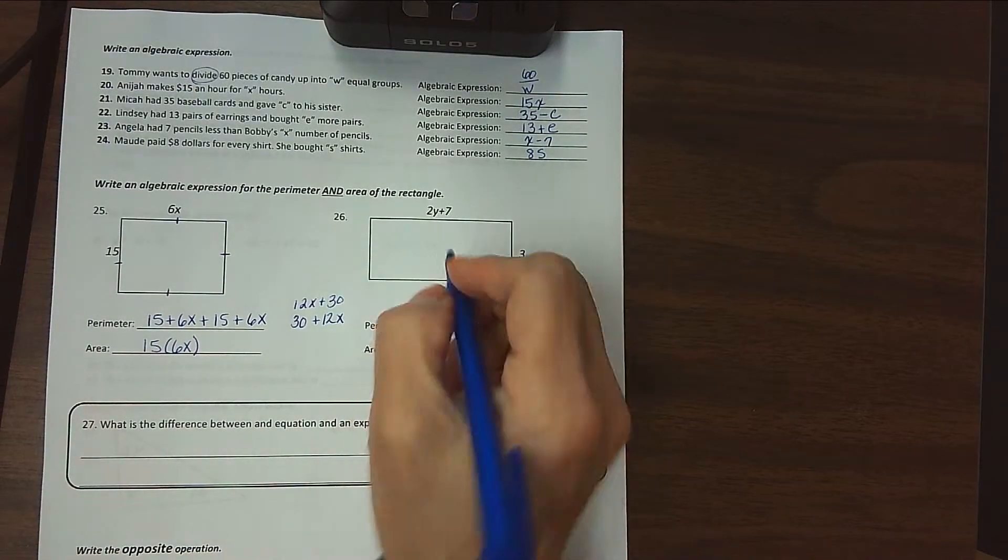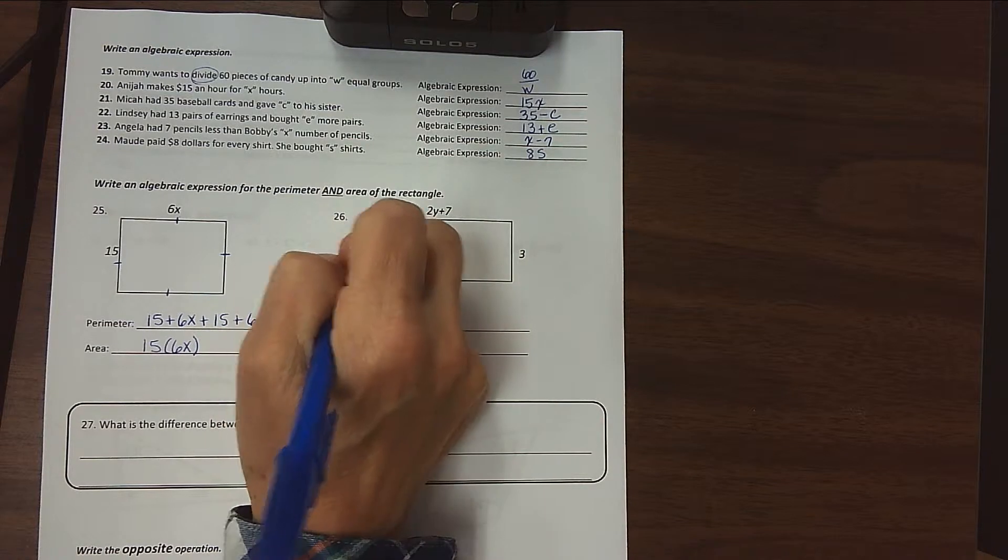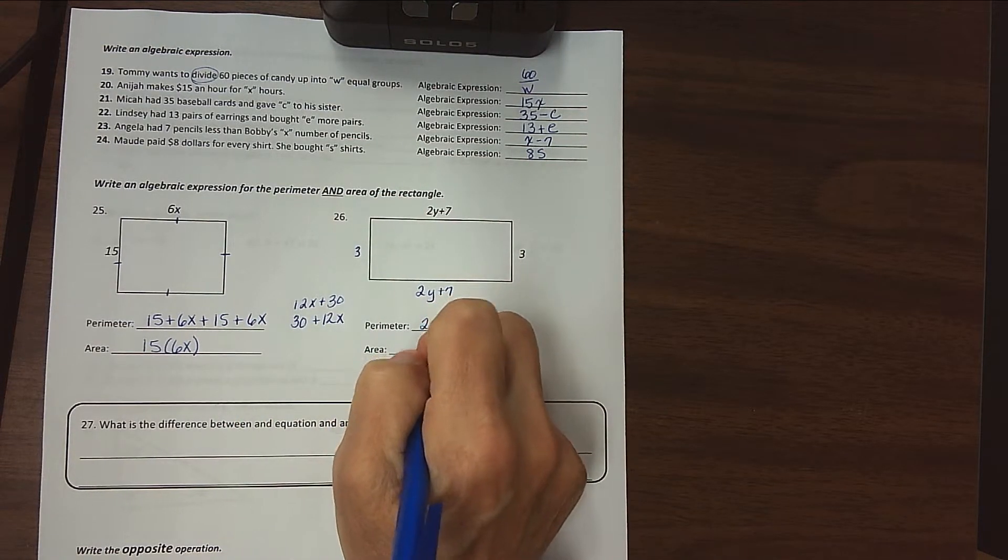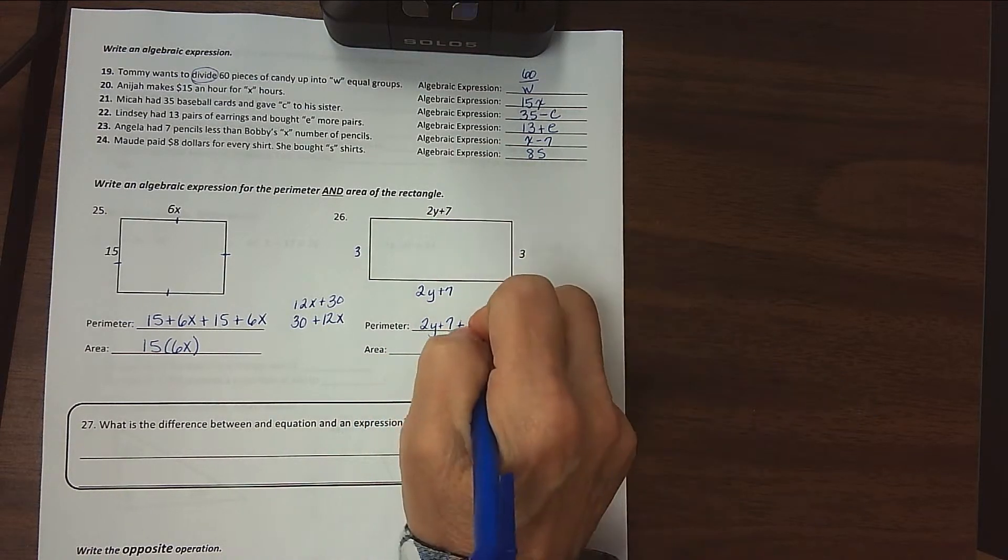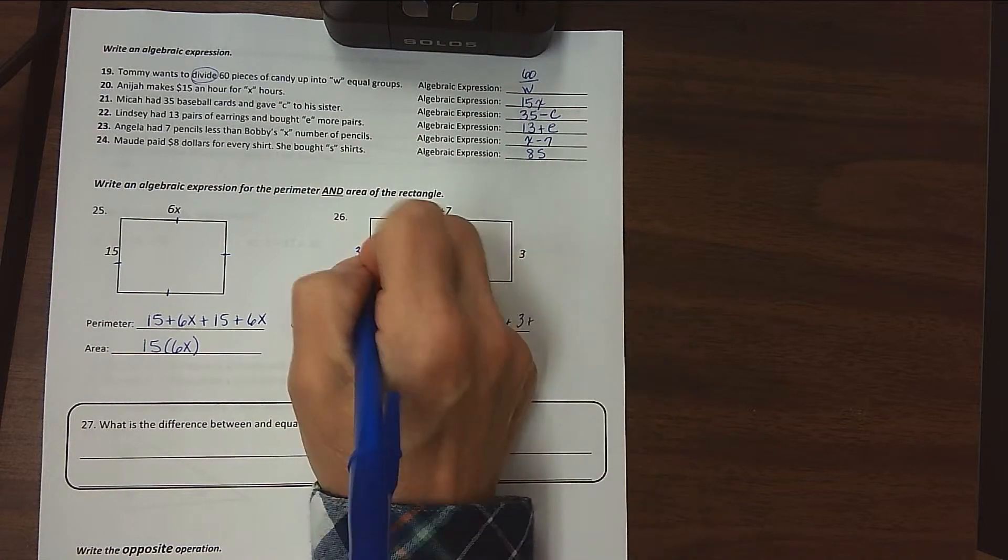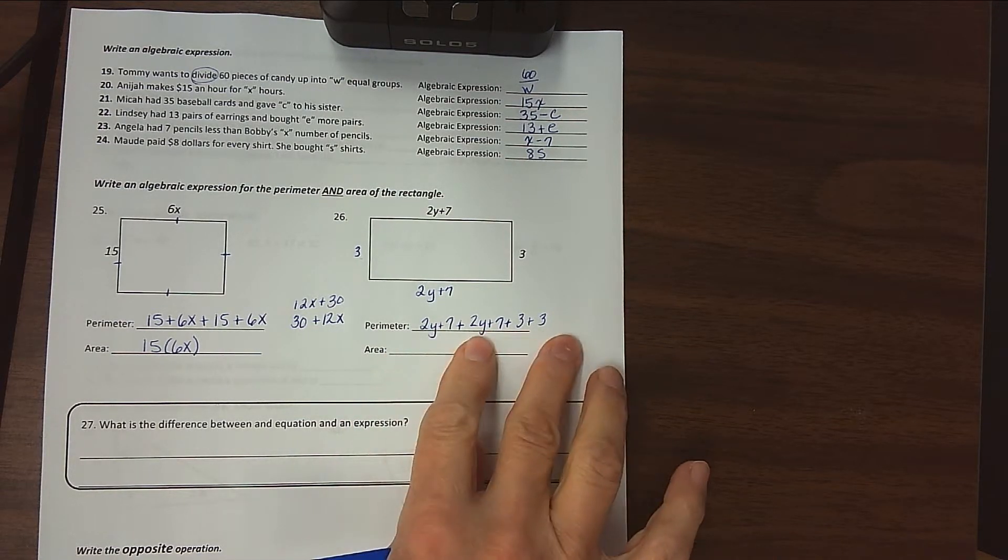A little more complicated. We know that this side has to be equal to 2Y plus 7, and we know that this side has to equal 3. So for perimeter, we have 2Y plus 7 plus 2Y plus 7 plus 3 plus 3. And again, we could combine the 2Ys to get 4Y and combine all of these numbers to get 20, but you don't have to do that.